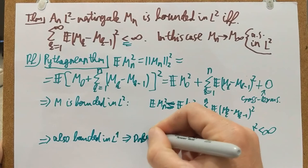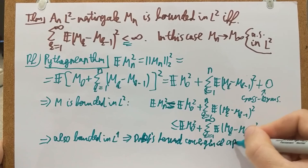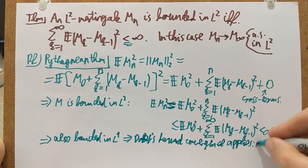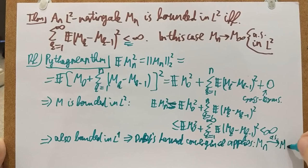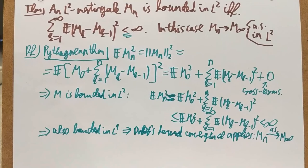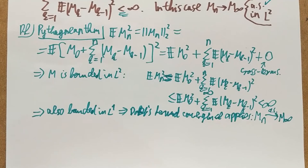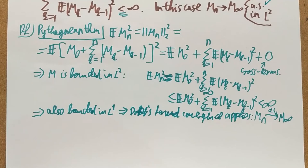Now, Doob's forward convergence theorem applies. We know that MN converges almost surely to M∞ — there is an almost sure limit. However, this does not prove L2 convergence; it only proves almost sure convergence. The theorem says we have convergence almost surely — which is now done — but also in L2, so we still need to prove that part.